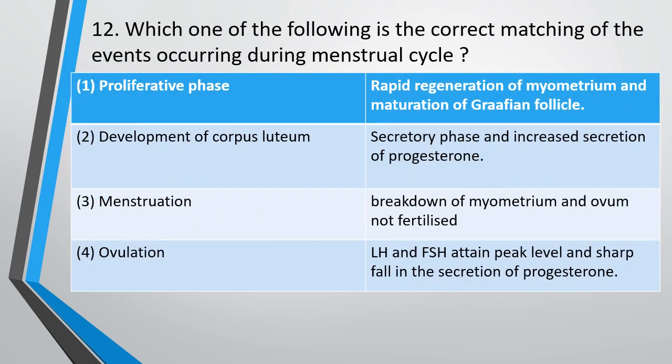Question number 12. Which one of the following is the correct matching of the event occurring during menstrual cycle? The correct answer is option 2. Proliferative phase, development of corpus luteum corresponds to the secretory phase and there is increased secretion of progesterone.